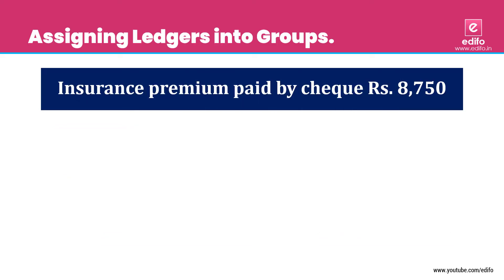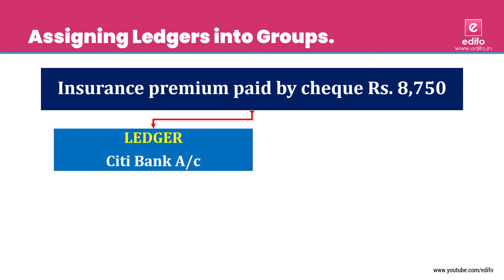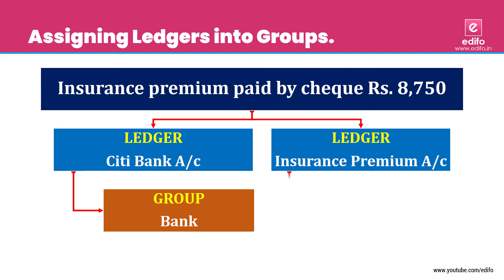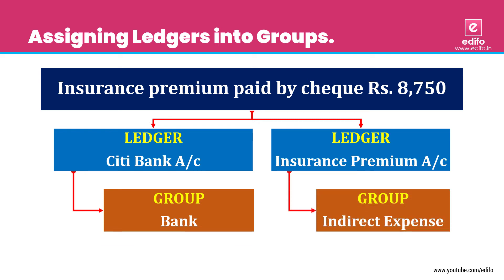Next transaction: insurance premium paid by cheque. The outflow aspect is paid by cheque, represented by Citibank. The benefit is insurance. Two aspects: Citibank account and insurance premium account. Citibank belongs to 'Bank' group and insurance premium belongs to 'Indirect Expense' group.